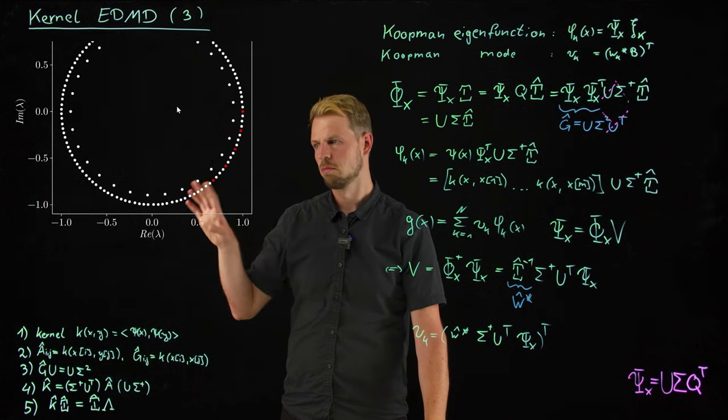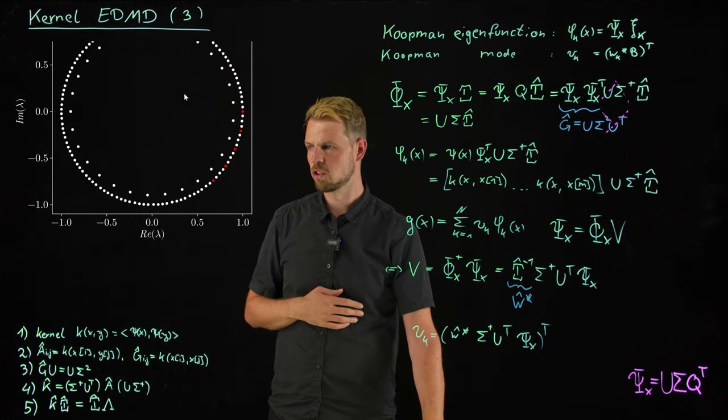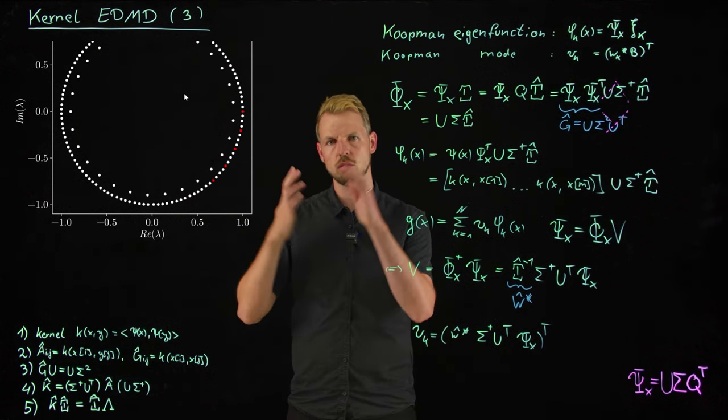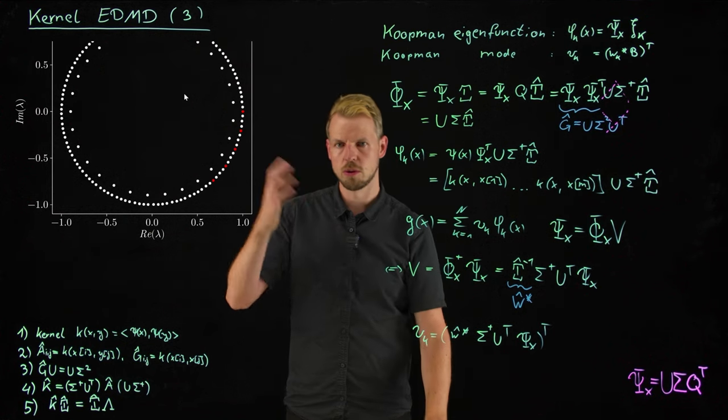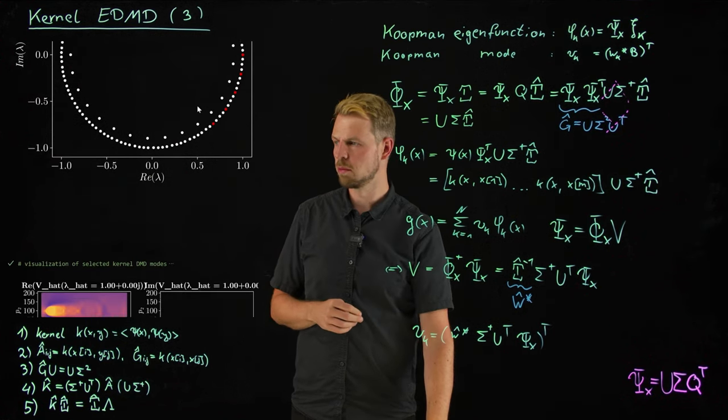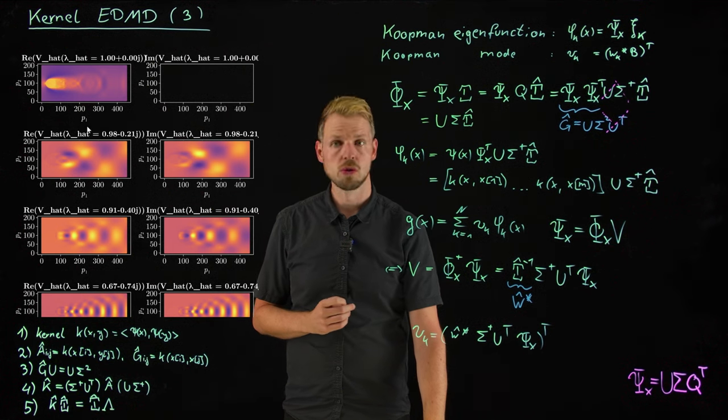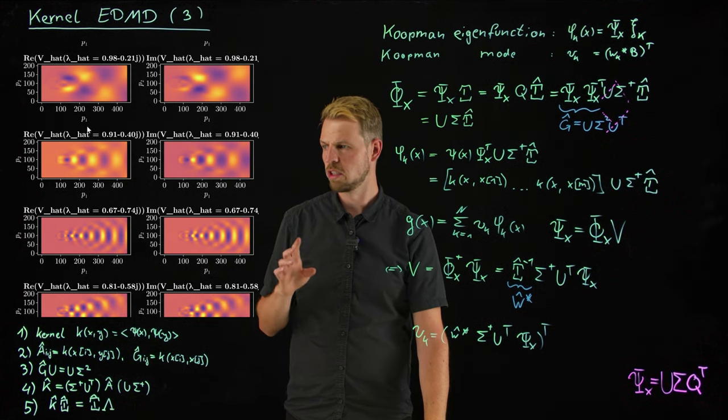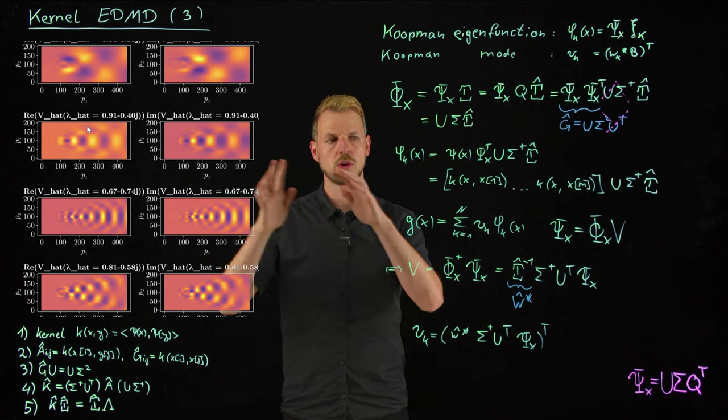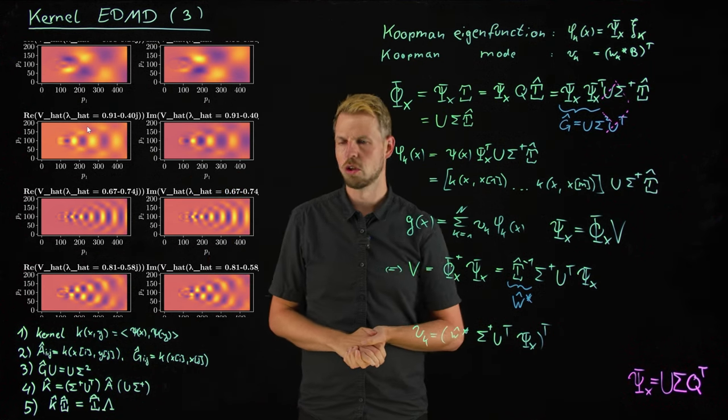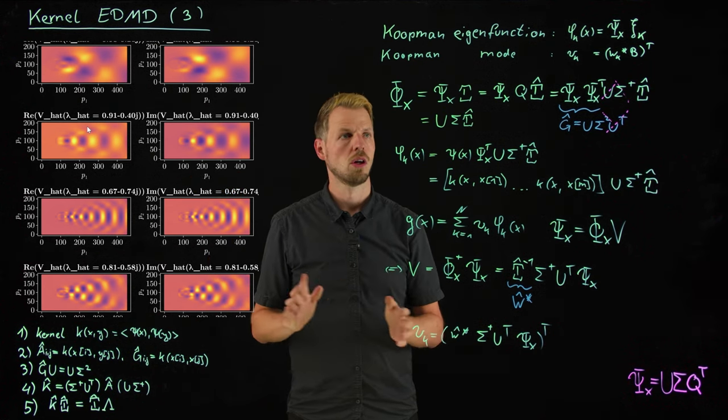Only this is an M by M computation, so it avoids the high dimensional space altogether. Previously, we had to do this SVD approximation because otherwise we couldn't even do it for standard DMD. And these are now the Koopman modes that we found. And you see that there's actually a great degree of similarity between what we have found before and what we have found in this kernel version.